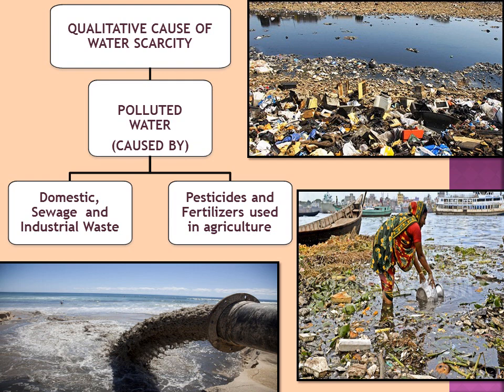Now let's see the qualitative causes of water scarcity. Qualitative causes mean water is available but its quality is not good. Water quality deteriorates due to pollution. Domestic waste, industrial waste, or sewage waste, if discharged into rivers, makes the water very dirty. Additionally, pesticides and fertilizers used in agricultural fields gradually seep down and pollute underground water. As you can see in the images, water in many places in India is very contaminated.